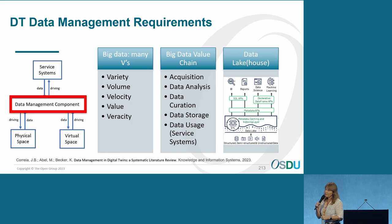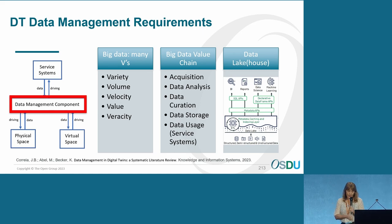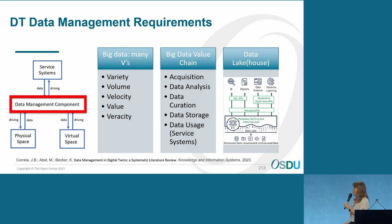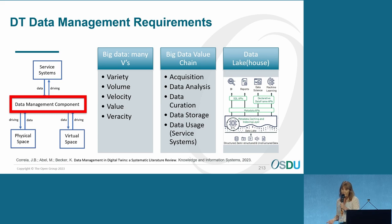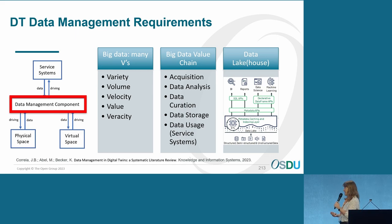We did a systematic literature review on what the data management component should be in a digital twin. There is absolutely no consensus on what it should do. The way we see it, it's a big data problem with many V's. We focus on the variety of data, the volume of data, and the velocity at which it is produced and consumed. But because digital twins are decision-making and data-centric systems, we believe the V's of value and veracity are also very important for making valuable decisions.